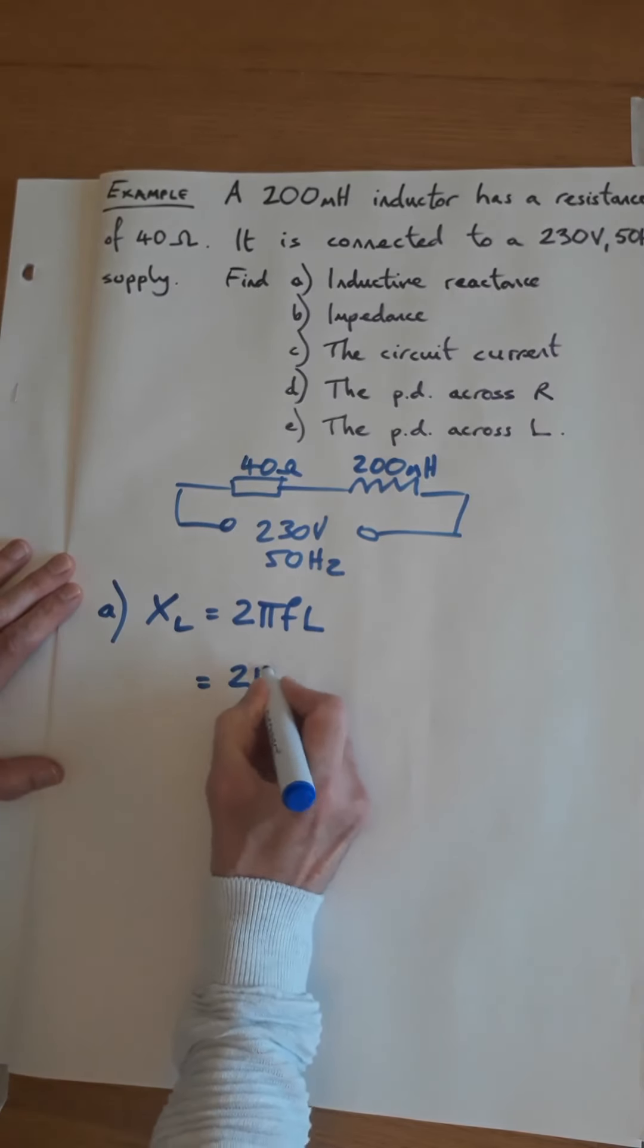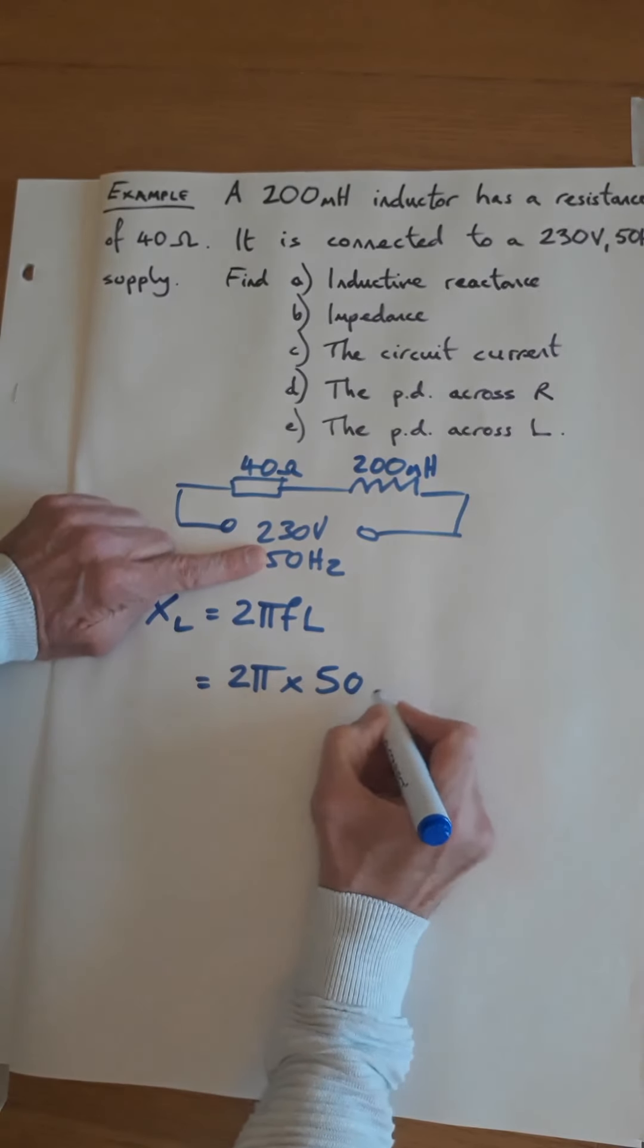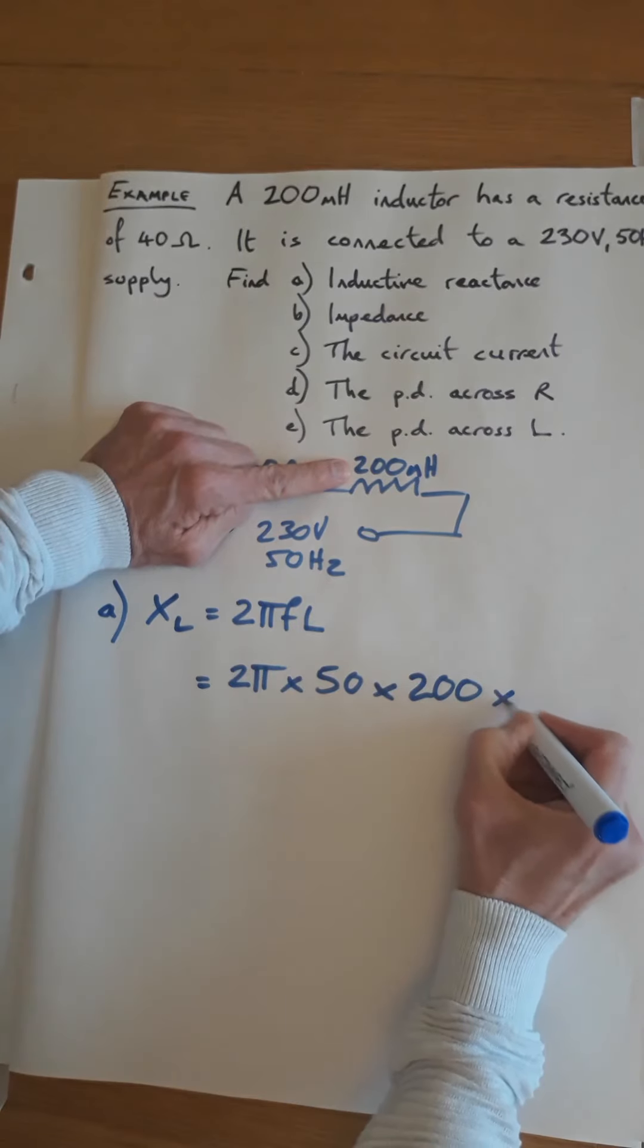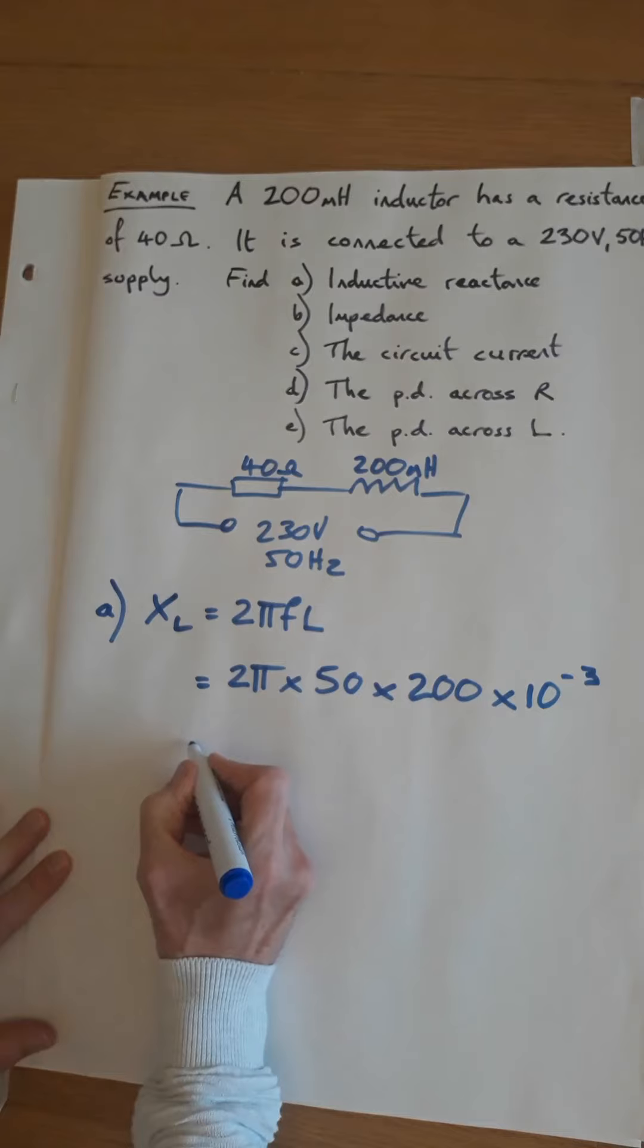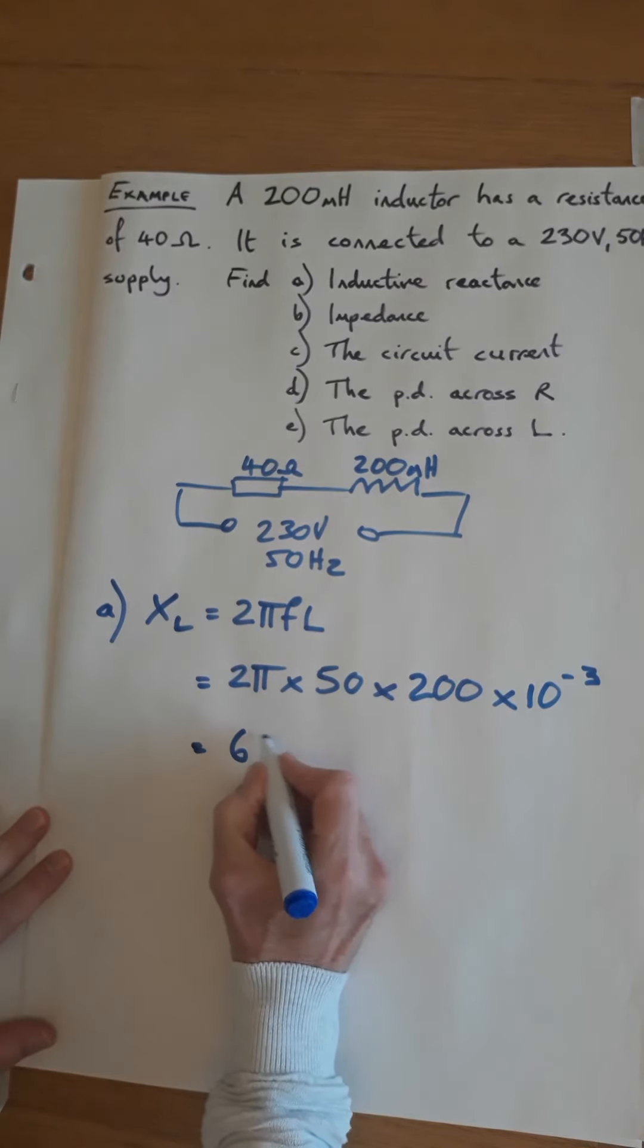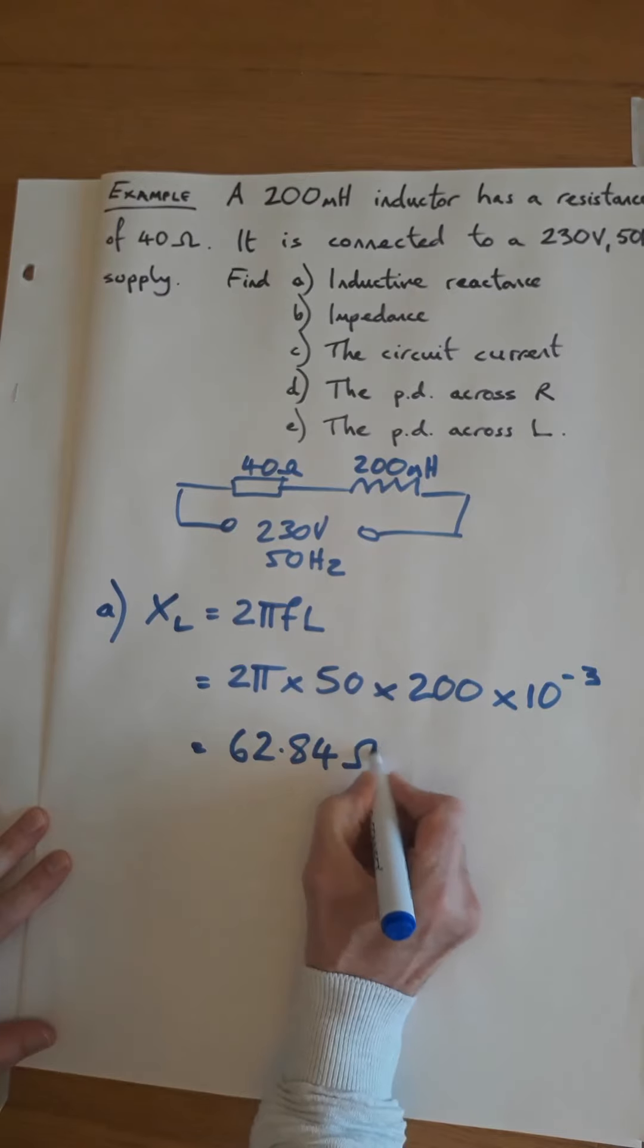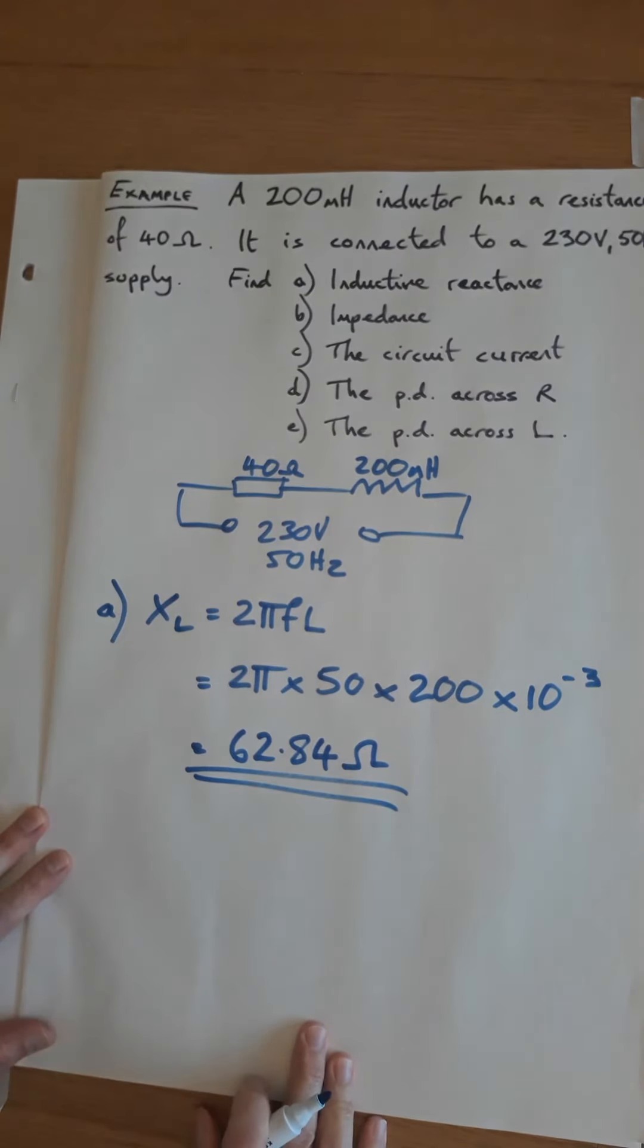Part A. We need to find the inductive reactance. XL is 2 pi FL. Put the numbers in: 2 pi times the frequency which is 50, times the value of L which is 200 milli, 200 times 10 to the minus 3. That comes to 62.84 ohms.